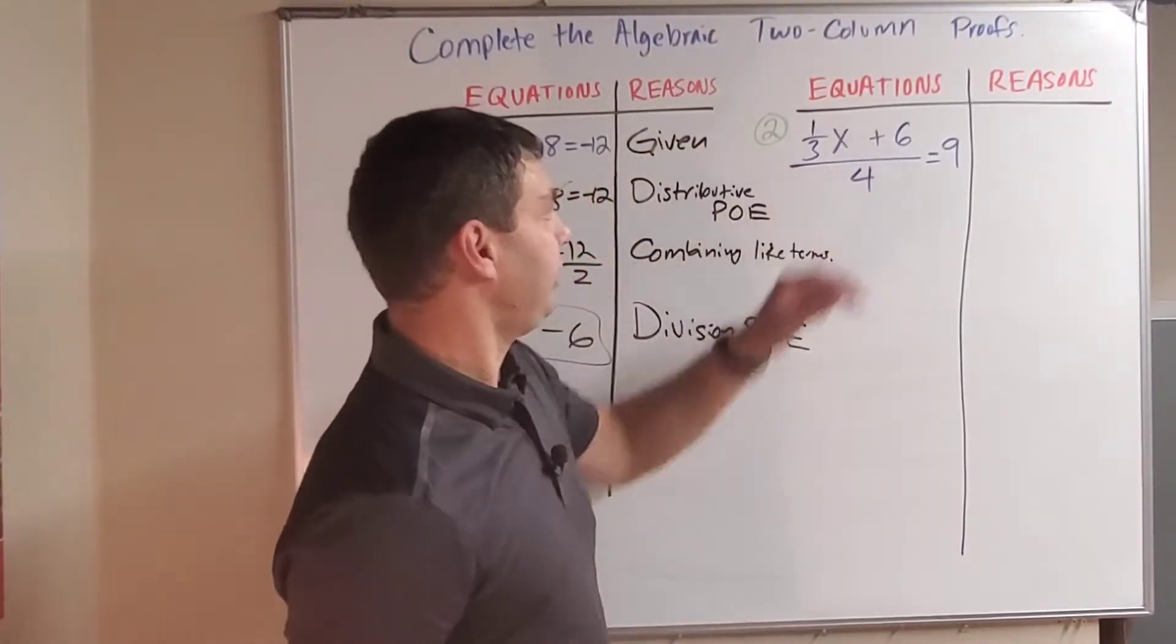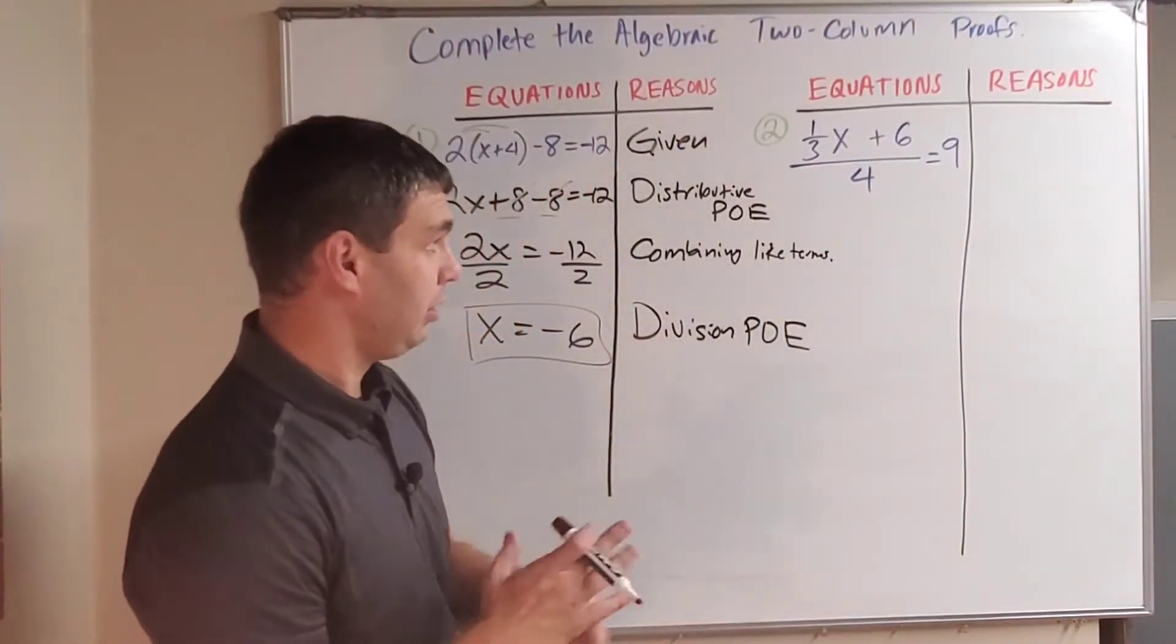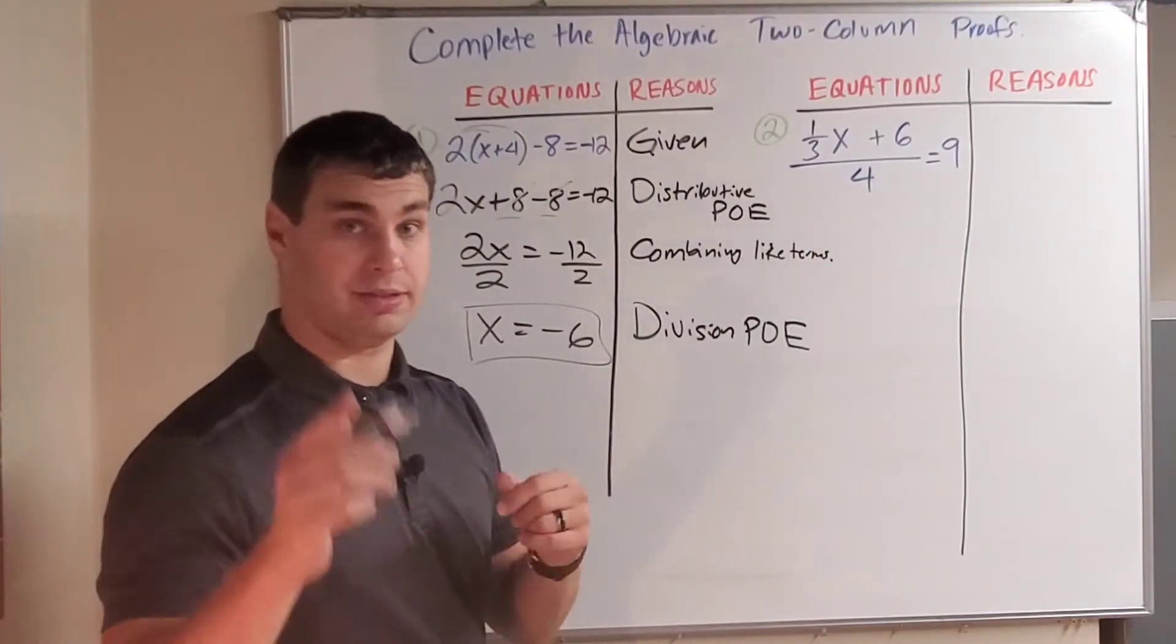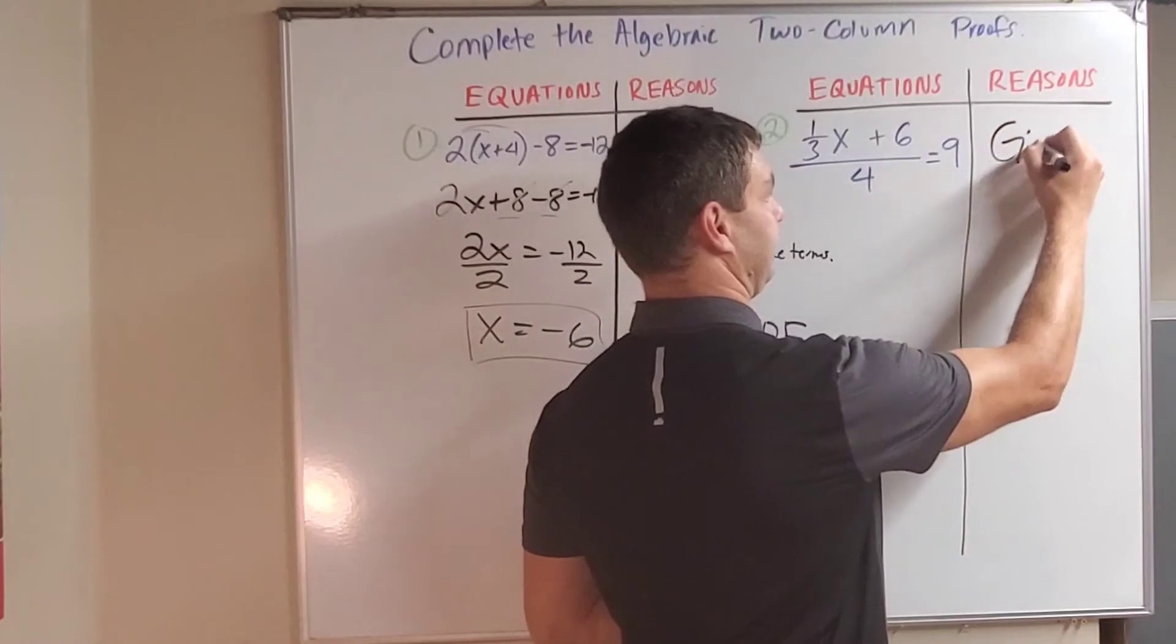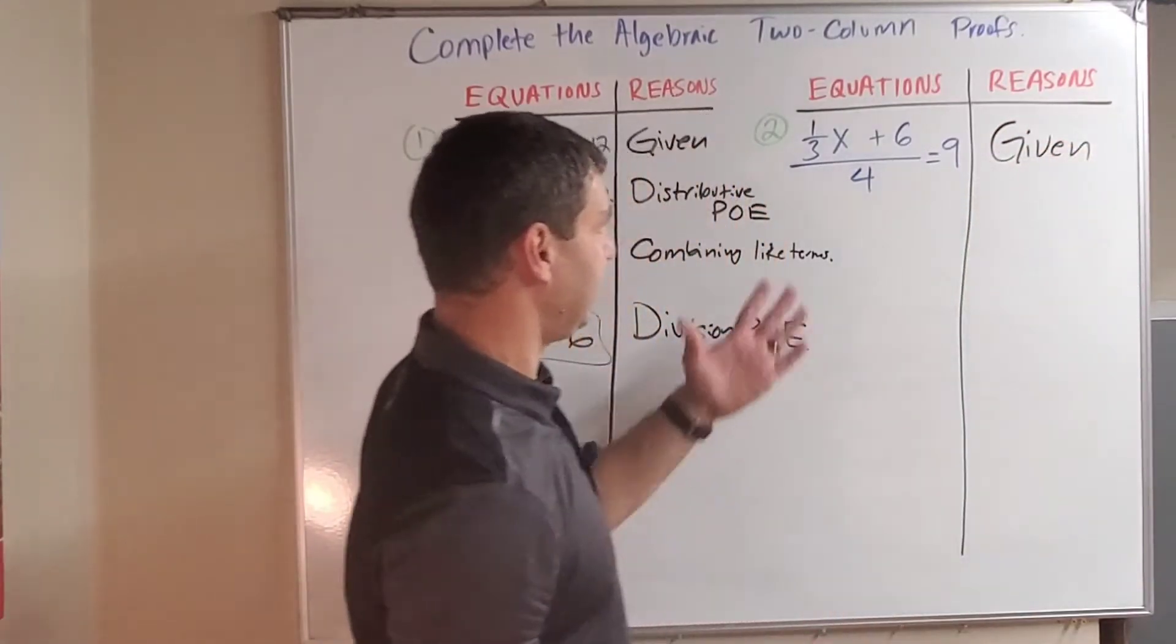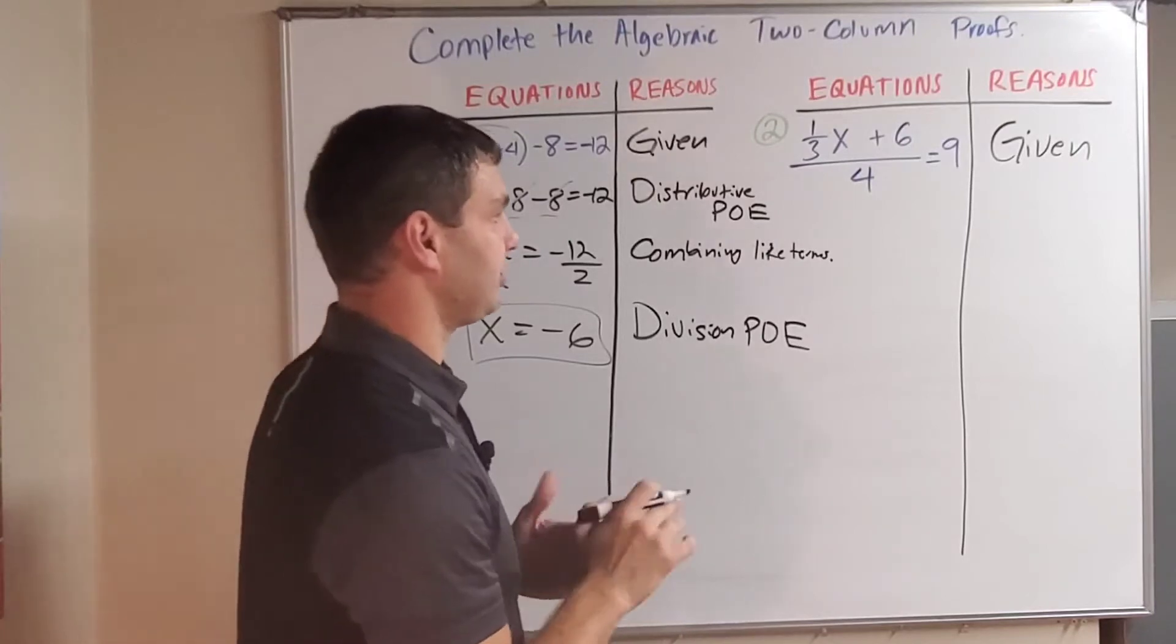Over here we have another equation. This is (1/3x + 6)/4 = 9. So again, our first reason is always given. Always given. So go ahead and write that down. And what did they give us? They gave us one-third x plus six, all divided by four equals nine.